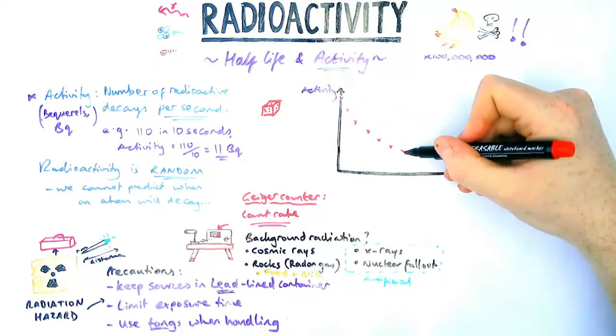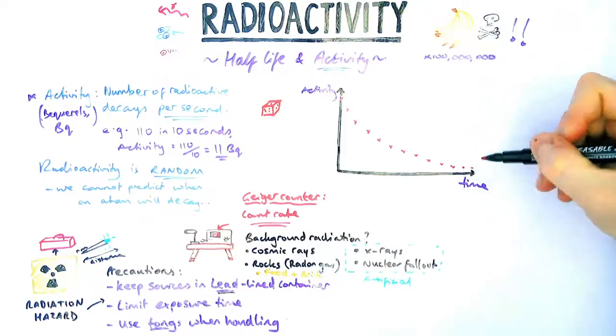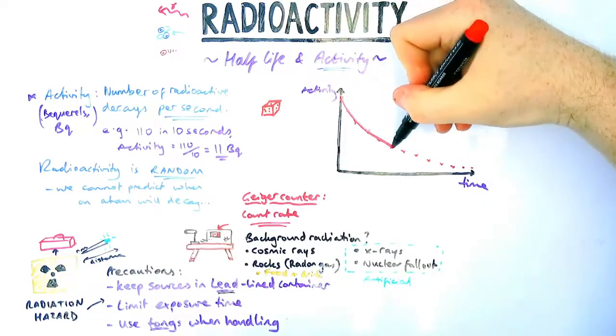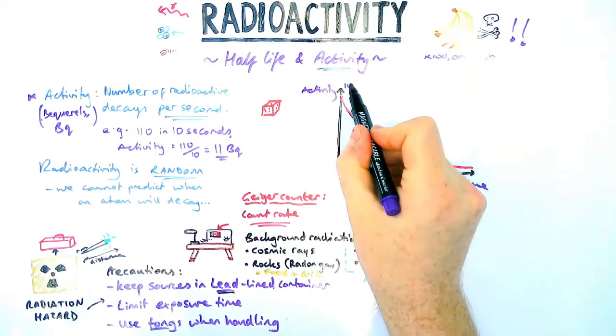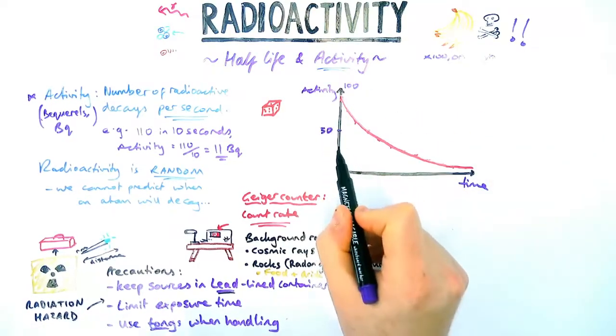So if we were to measure the activity of various different sources over time, we'd find the graph looks like this. The activity will decrease in this kind of curve shape here, and you need to learn how to draw a line of best fit for that.